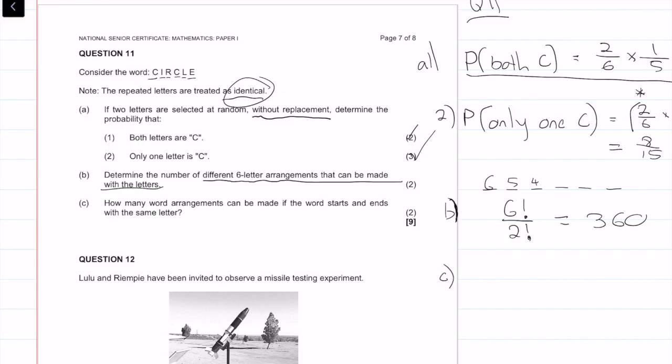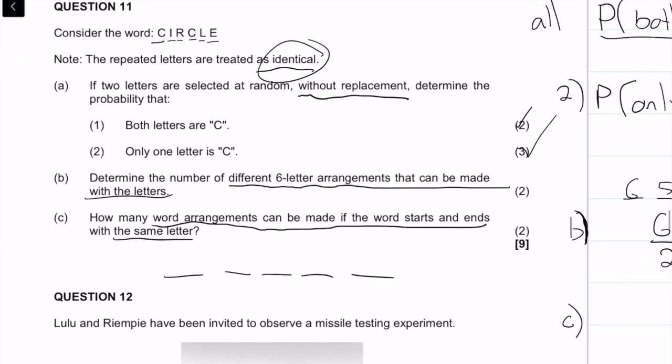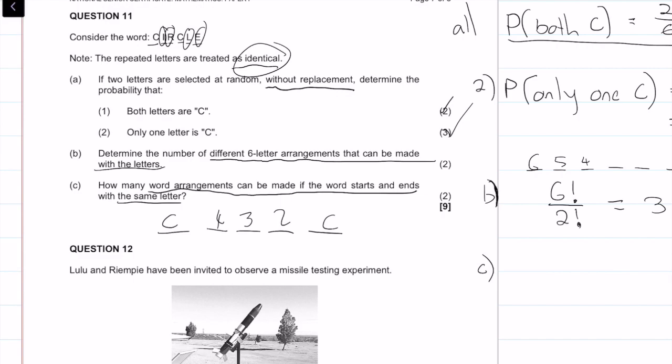Determine how many word arrangements can be made if the letters start and end with the same letter. So we have six options. If it starts and ends with the first letter, it has to start with C and has to end with C, because those are the only repeat letters we have. So in between here, we can have I, R, C, or E. So we can have four options here, three options here, two options here. So what is that? That is just four factorial.